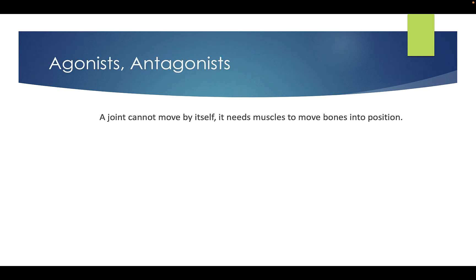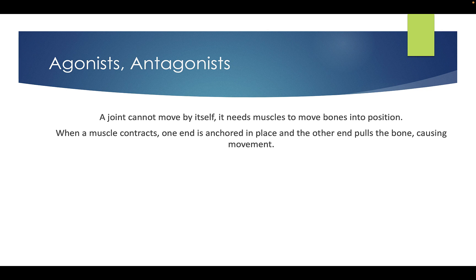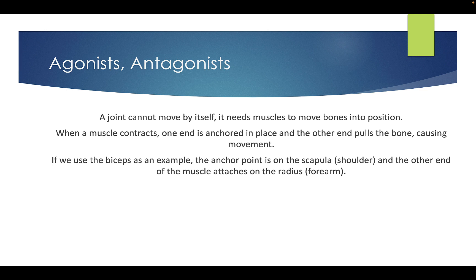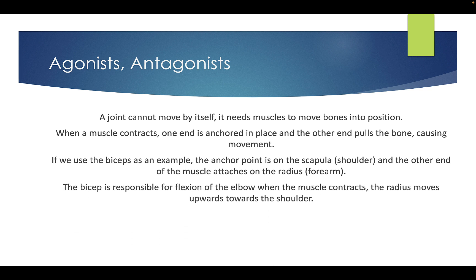If we're looking at agonists and antagonists: a joint cannot move by itself — it needs muscles to move the bone into position. When a muscle contracts, one end is anchored in place and the other end pulls the bone causing movement. Using the bicep as an example, the anchor point is on the scapula, and the other end of the muscle attaches to the radius. The bicep is responsible for flexion of the elbow — when the muscle contracts, the radius moves upwards towards the shoulder.